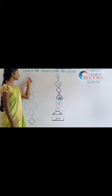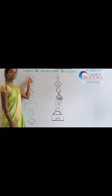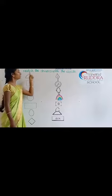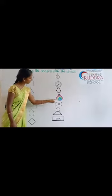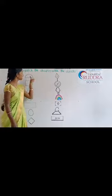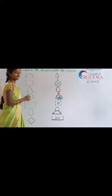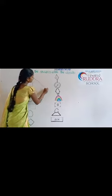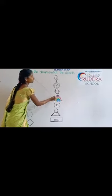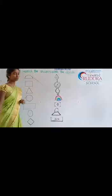What shape is this? This is a semicircle. Which picture is similar to the semicircle? Rainbow. Rainbow is similar to the semicircle. I will draw a line from semicircle to rainbow.